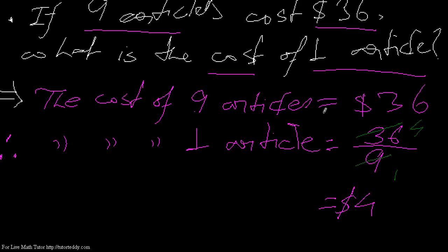Now, this kind of statement is called unitary method. That means when I have a given statement in which I have the values both on the right-hand side and the left-hand side, and I have to find in terms of 1 - 1 means unit, right? So I am finding: if for 9 the value is 36, what will be the value for 1? This kind of statement I have to make in a unitary method.